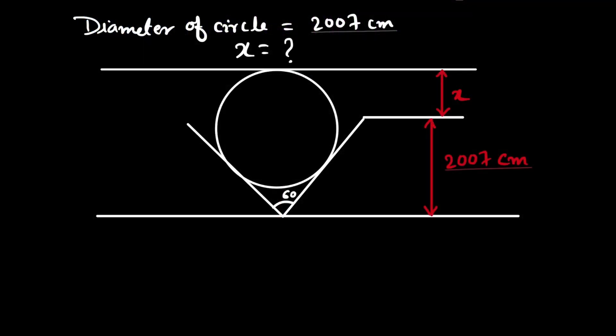Welcome to our YouTube channel Saval Bawal. Our question is to find the value of x in the given figure if the diameter of the circle is given and that is 2007 centimeter.